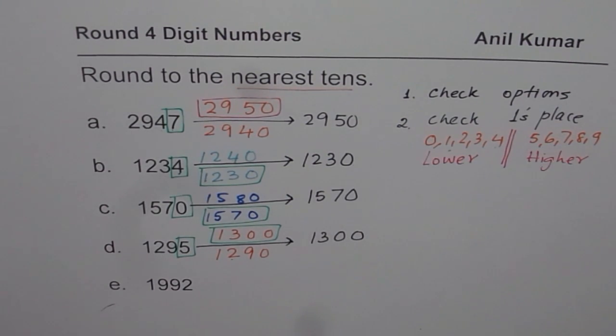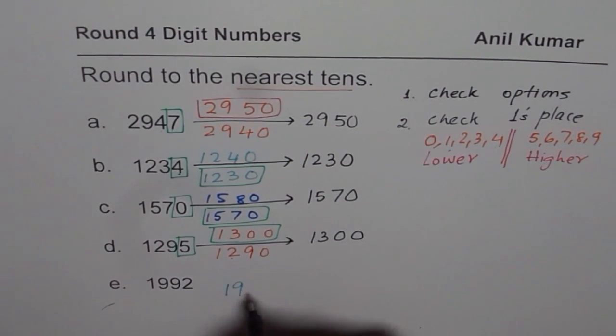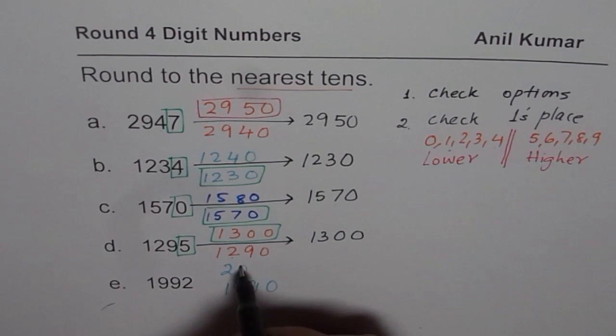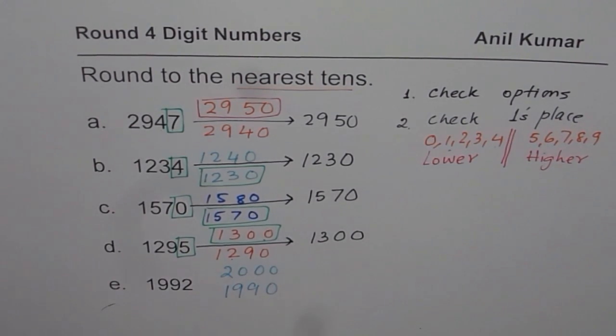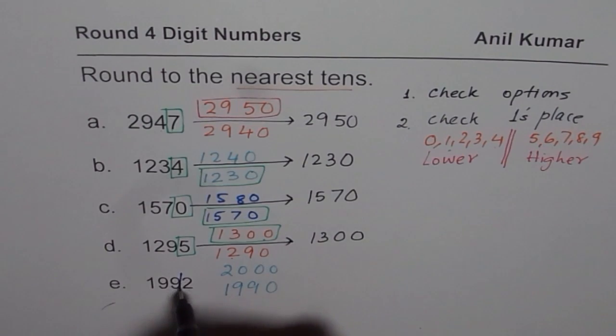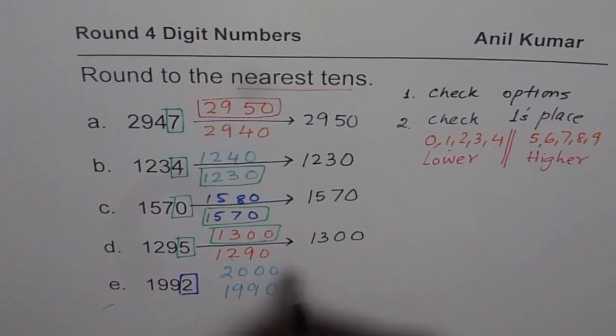Now, let us do the last one here. It is 1,992. 1,992 is between 1,990 and 10 more. That means 2,000. Do you see that? It is kind of similar to this. I have purposely taken this example for you to understand. Now, we will check the number in 1's place. It is 2. The lower number.